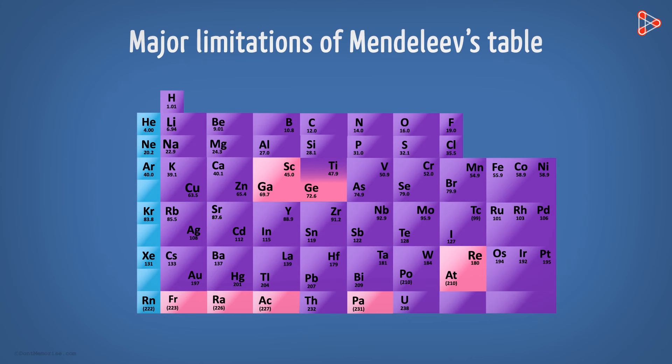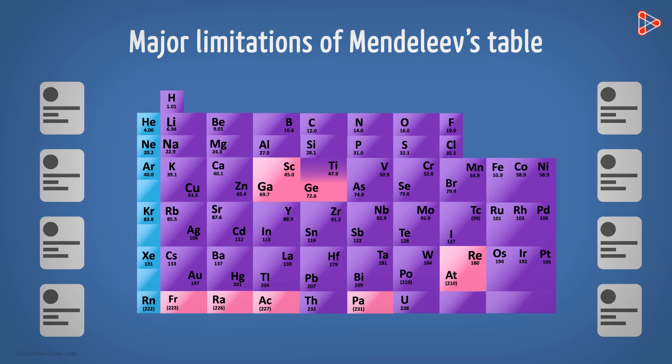Also, we have taken a look at the major limitations of the Periodic Table by Mendeleev. So with all these limitations, how do we study the elements? How do we carry out the Periodic Classification?